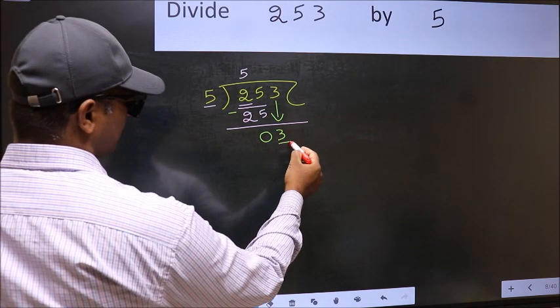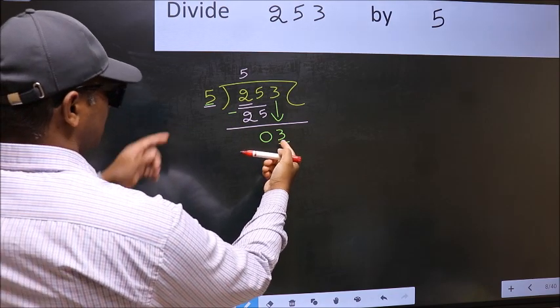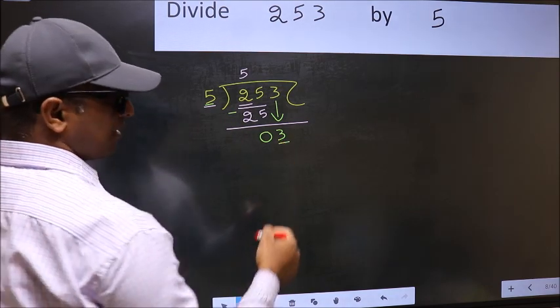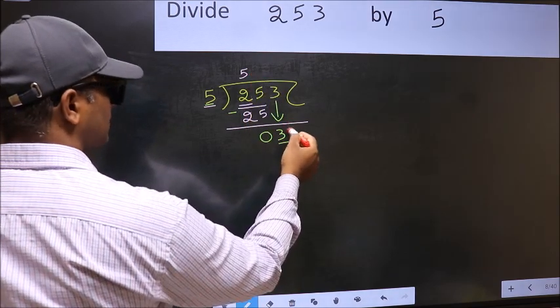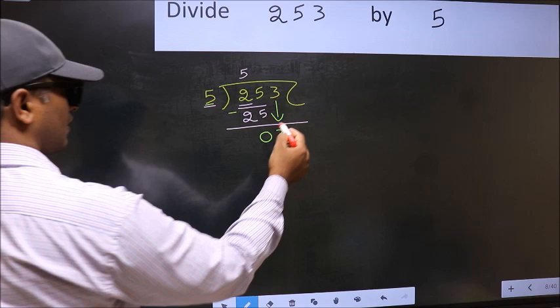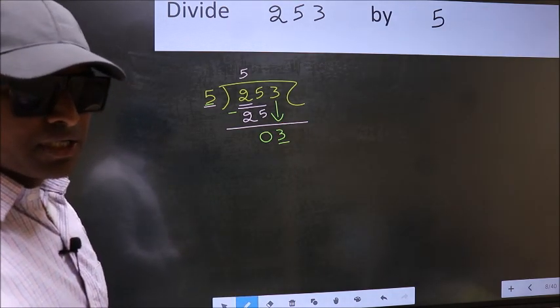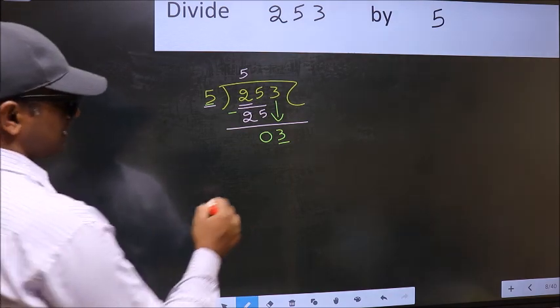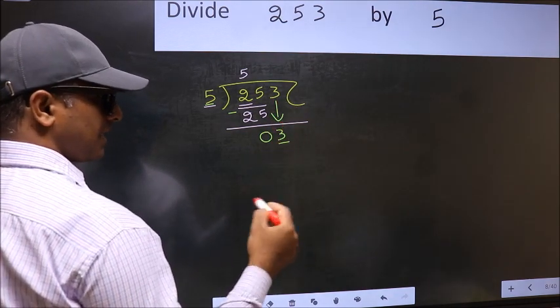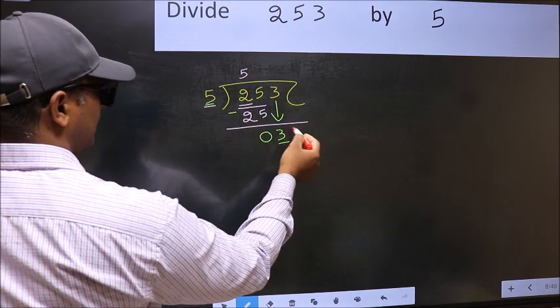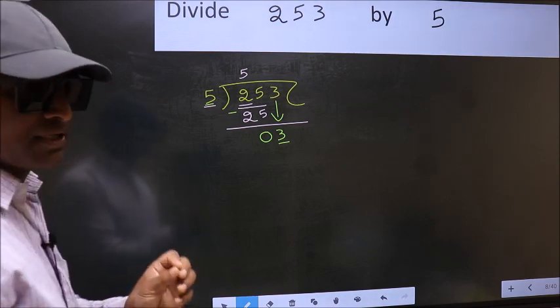Here we have 3 and here 5. 3 is smaller than 5. So what many do is they directly put dot and take 0 which is wrong. Why is it wrong? Because just now you brought this number down and in the same step, you want to put dot and take 0 which is wrong.